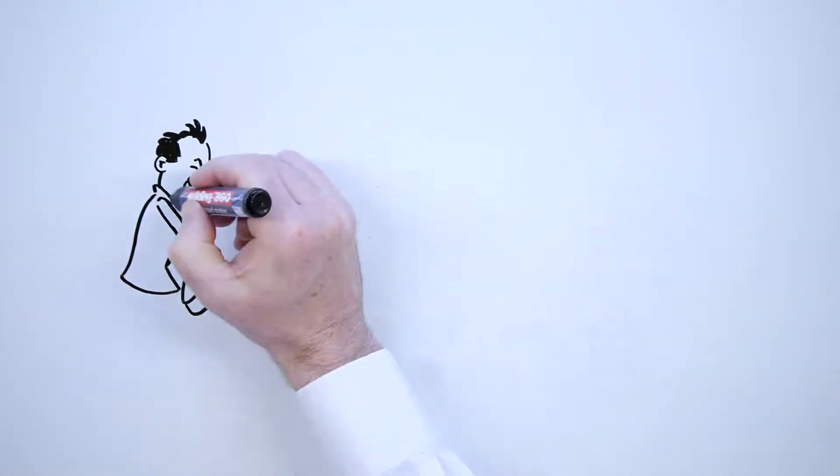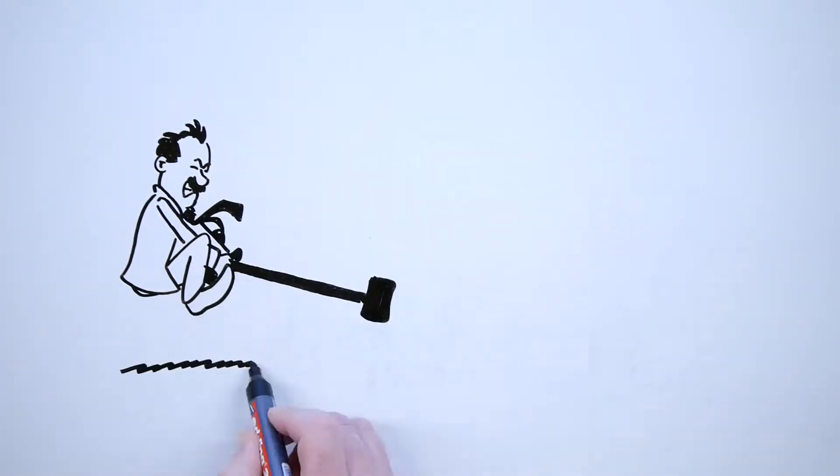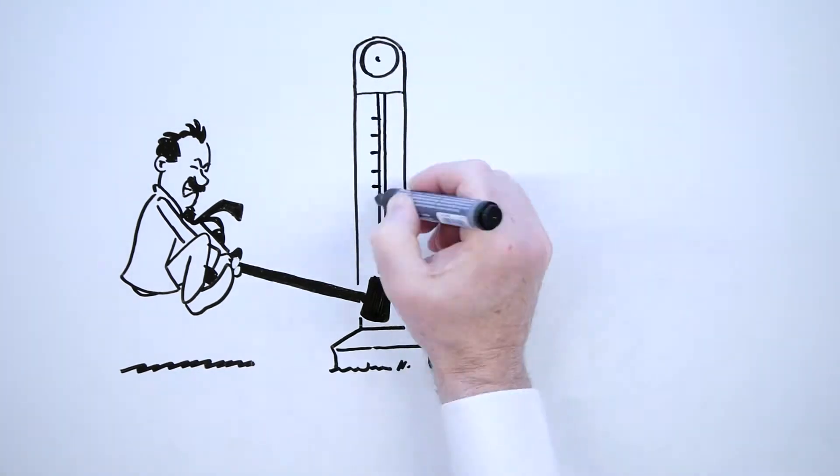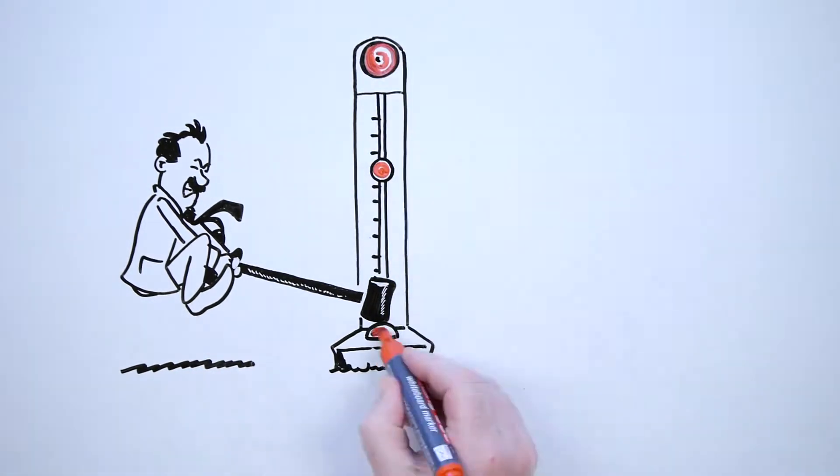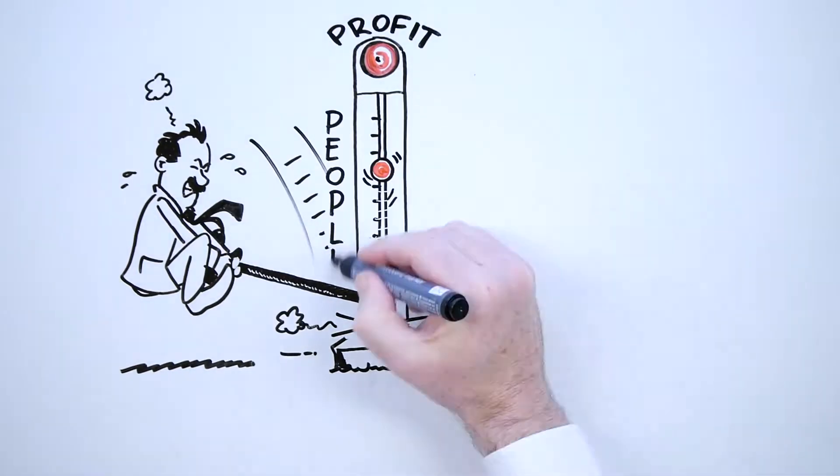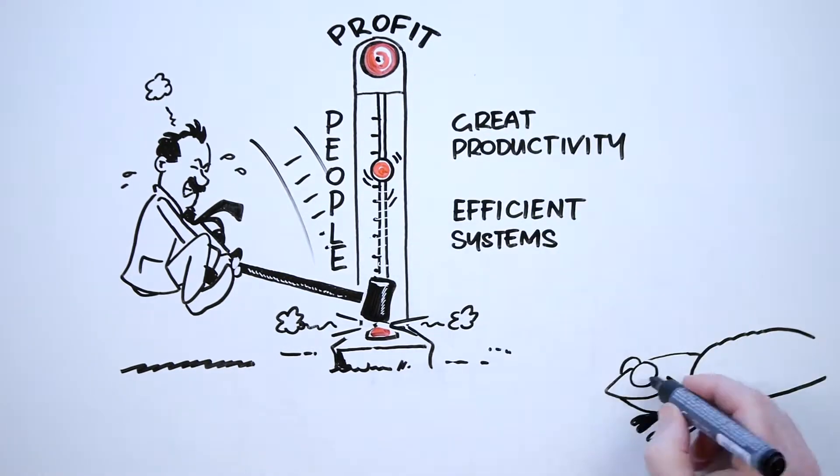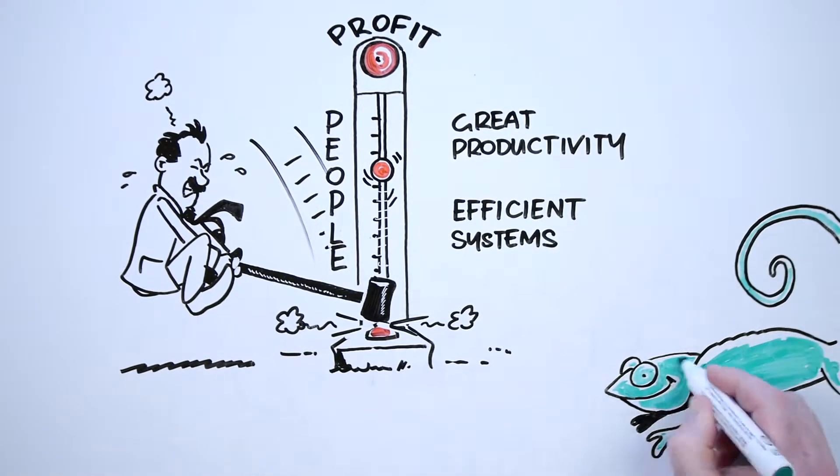They say the secret of a successful company is the people, and whilst that may be true, the secret of an efficient organisation is in its systems. The more efficient the systems, the greater the productivity. The greater the productivity, the higher the profit.